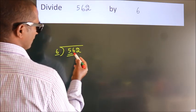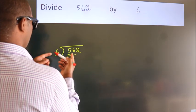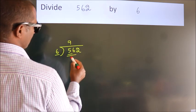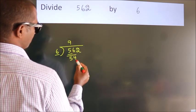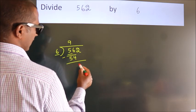...should take two numbers: 56. A number close to 56 in sixth table is six nines, 54. Now we should subtract, we get 2.